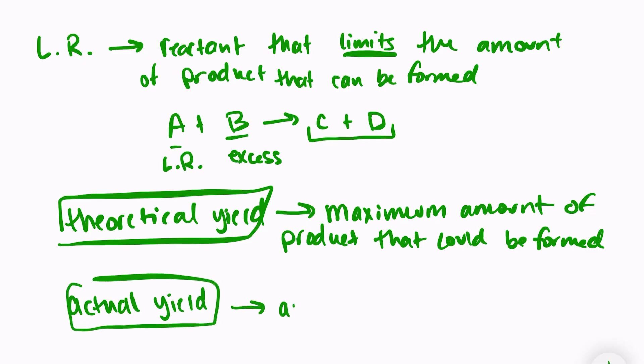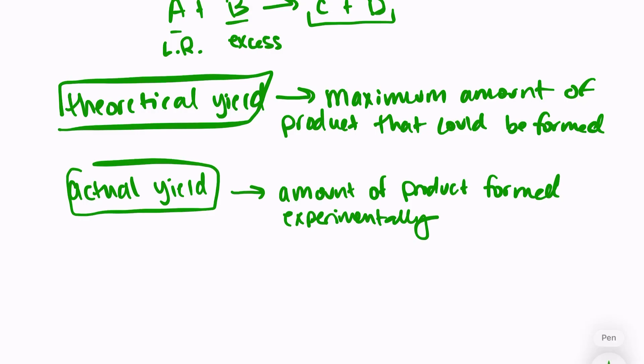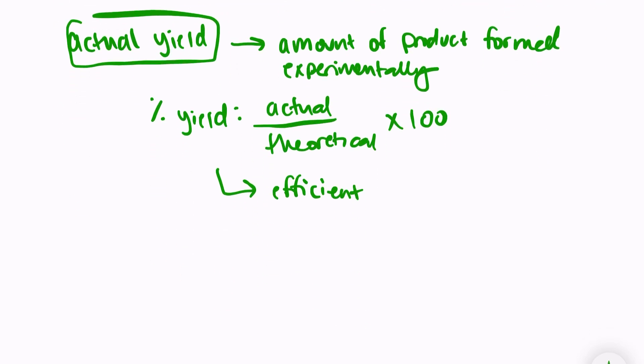The real amount of product that's formed is called the actual yield, and that is the amount that was obtained in the lab—the amount of product formed experimentally. We can compare these two yields by looking at the percent yield, where we take the actual yield over the theoretical yield times 100. That will tell us how efficient our reaction was. If you had a percent yield of around 90%, that would be very efficient—almost all your reactants were made into products. You didn't have very much reactant that was lost.